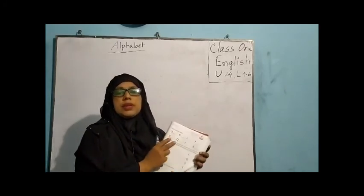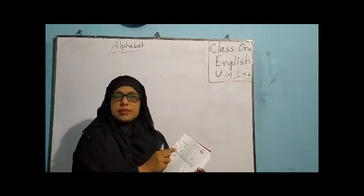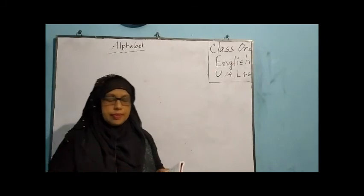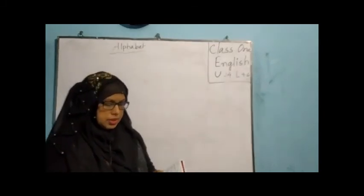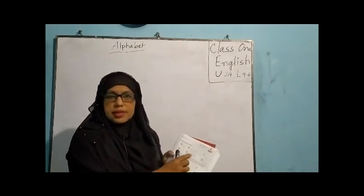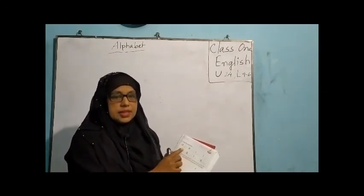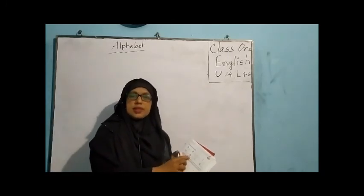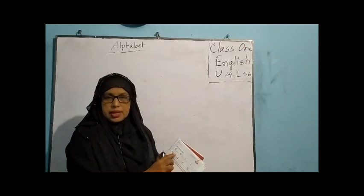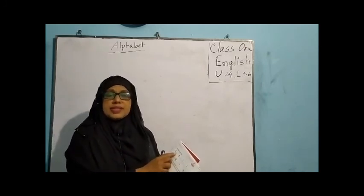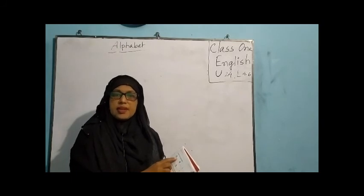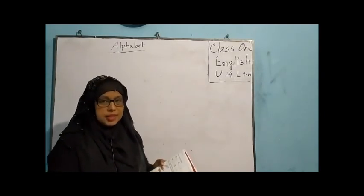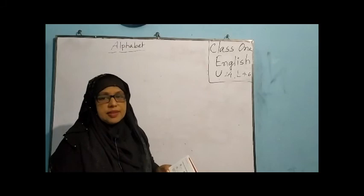First, look at the activity of Section A: Write the next letter. You have to write the next letter. The letters are small — there are some small letters and some gaps. You have to write the next letter, meaning which letter comes after the given letter.